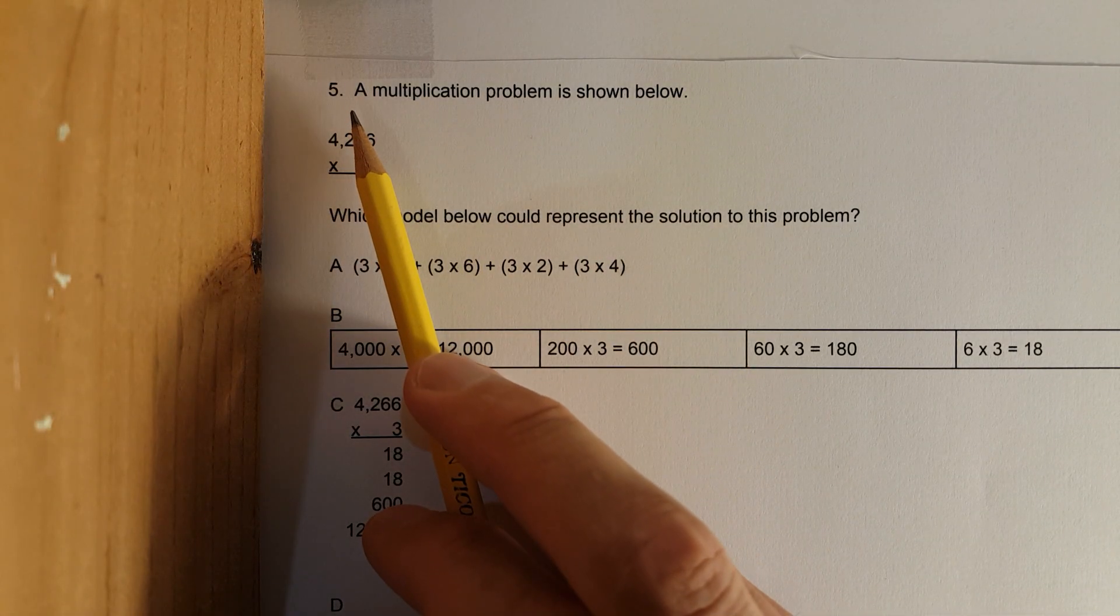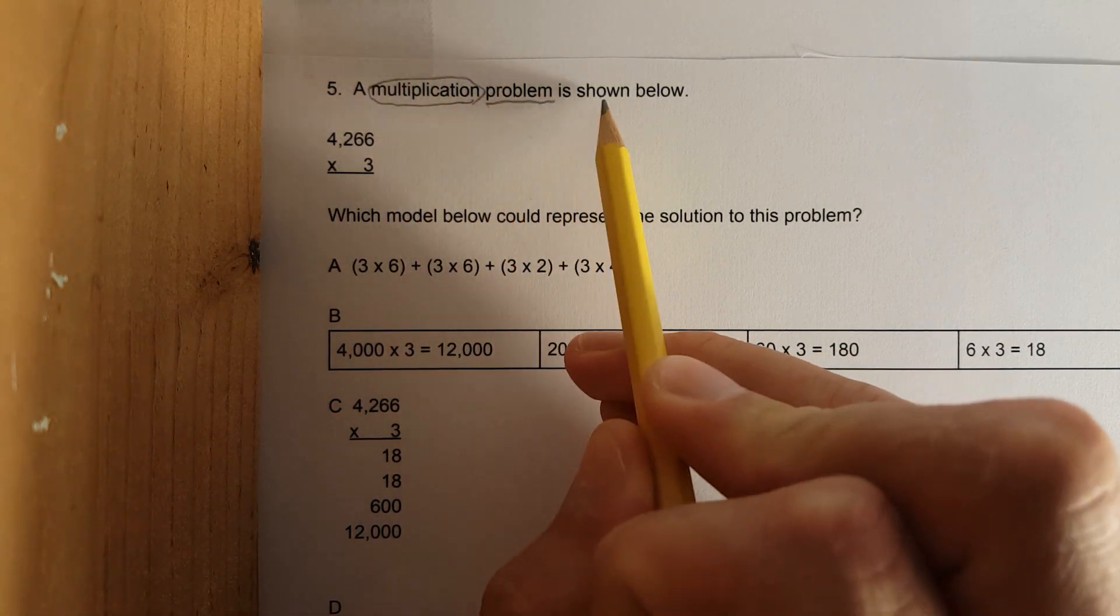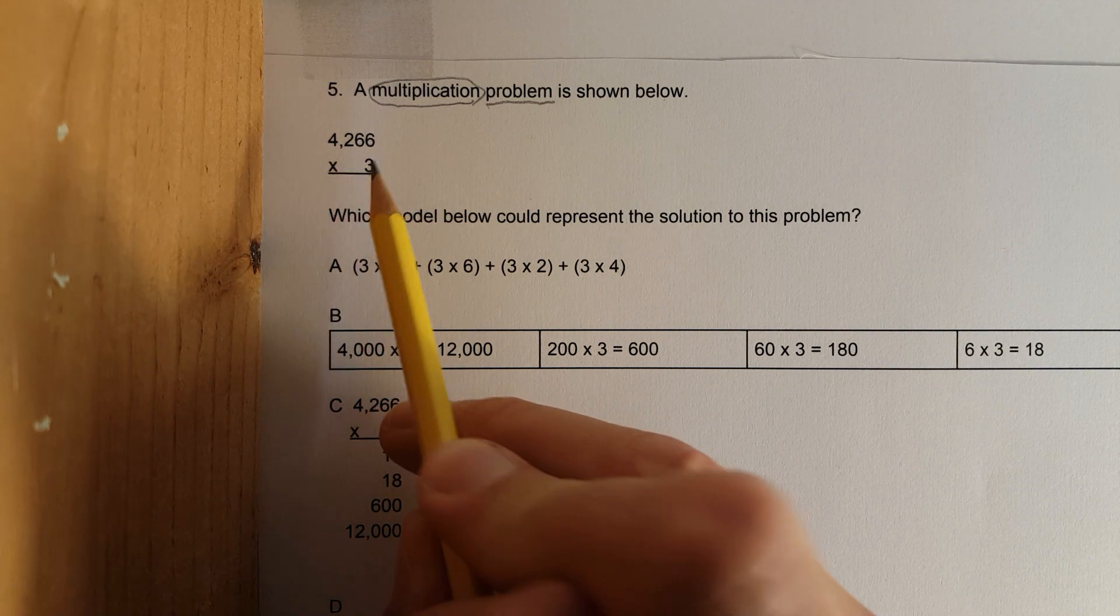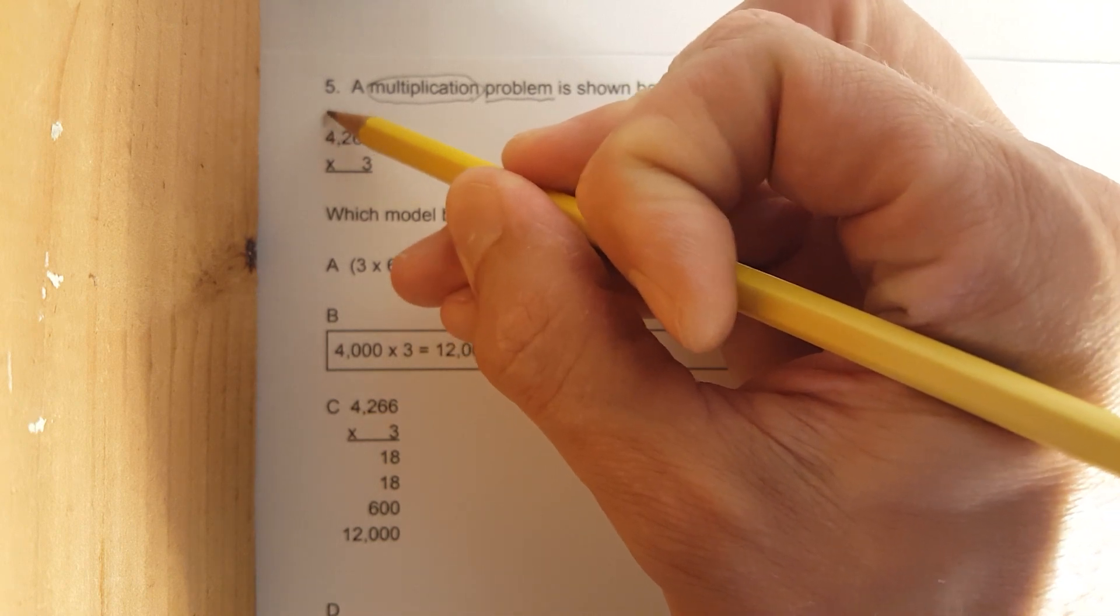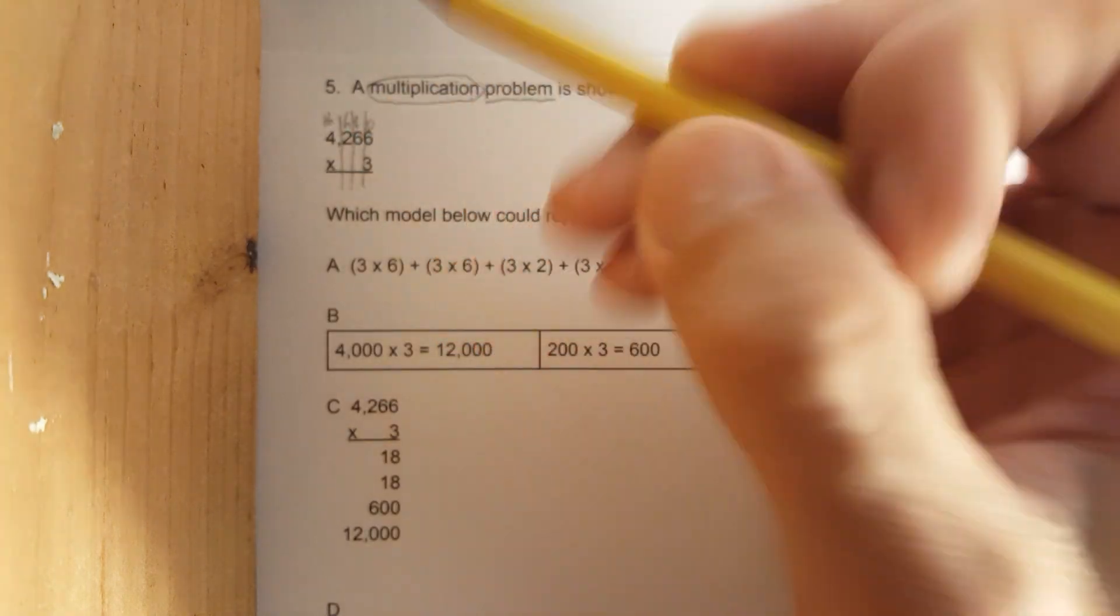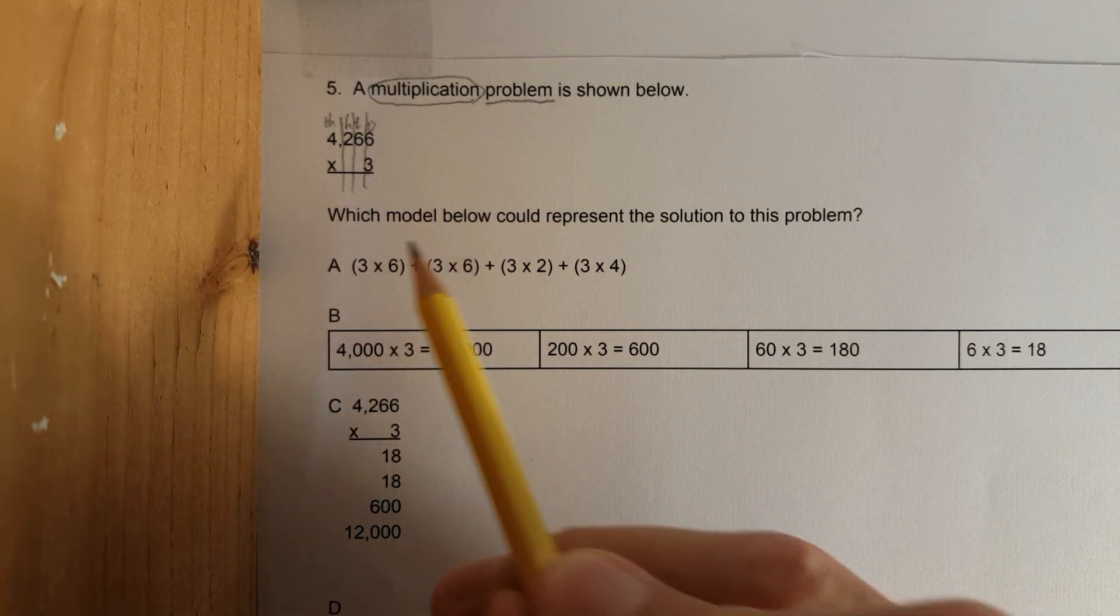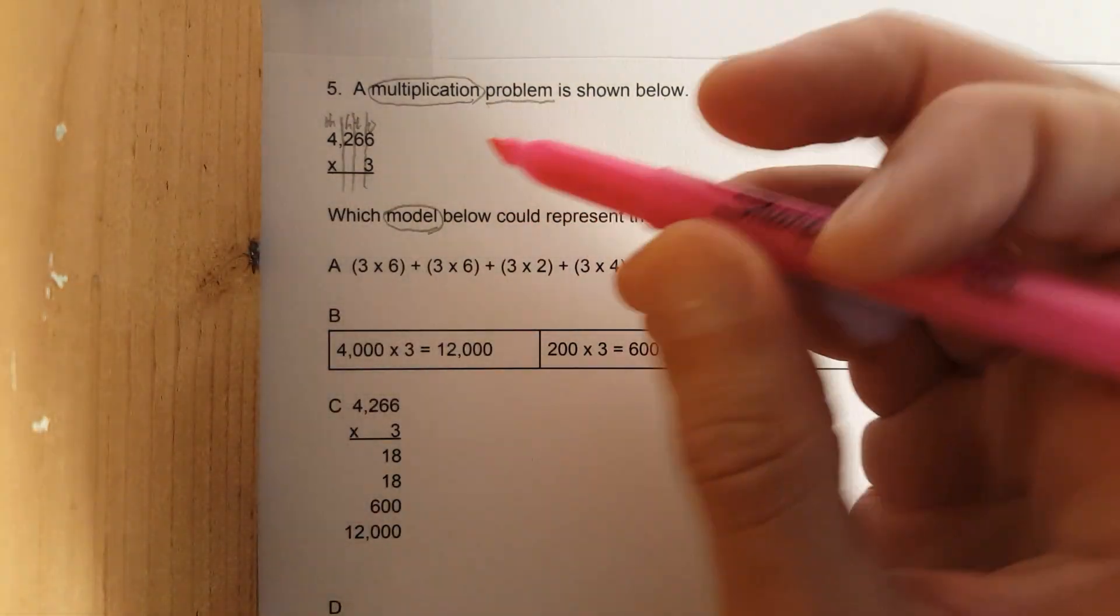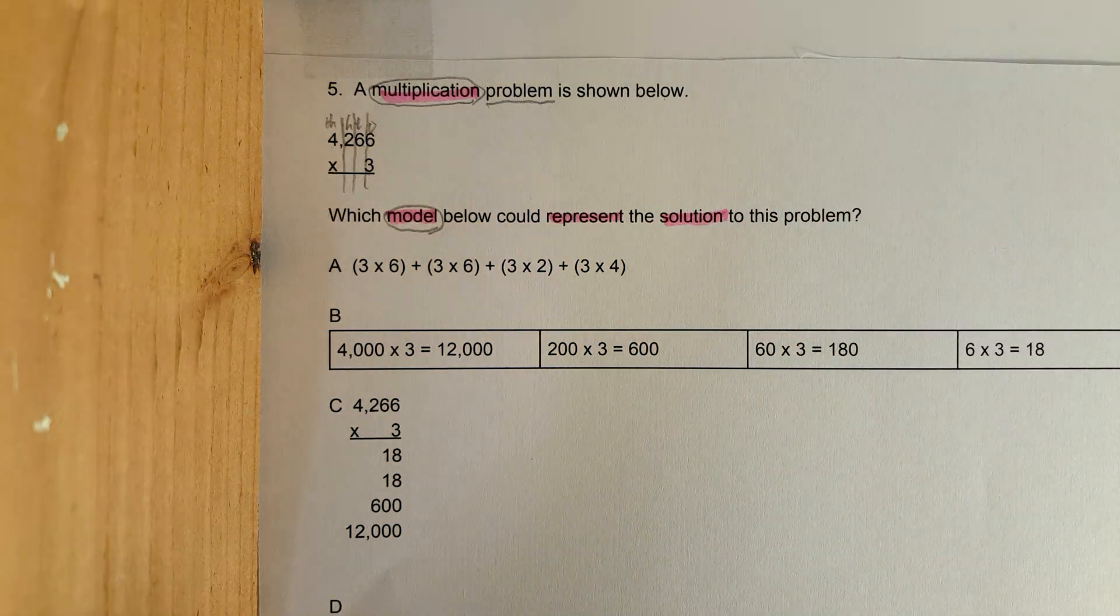This is number five. A multiplication problem is shown below: 4,266 times 3. Let's do a place value table: ones, tens, hundreds, thousands. Say it with me - ones, tens, hundreds, thousands. Which model could represent the solution to